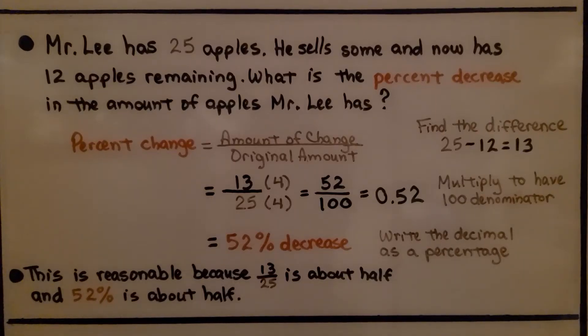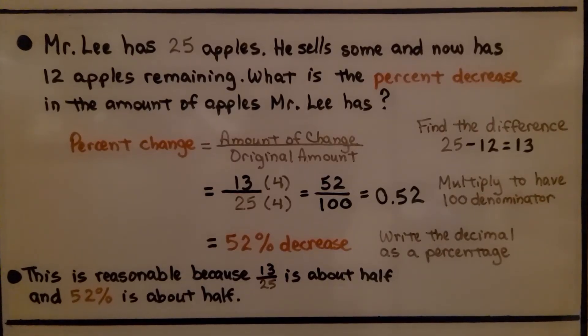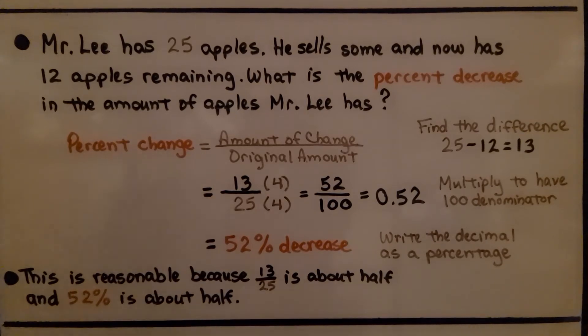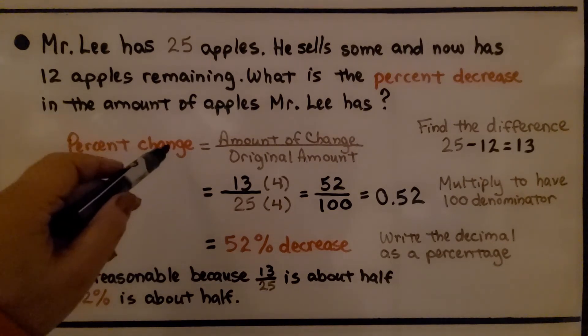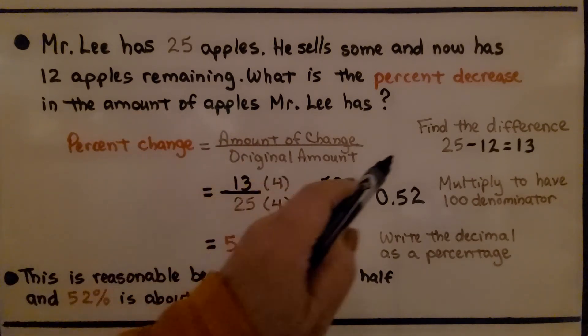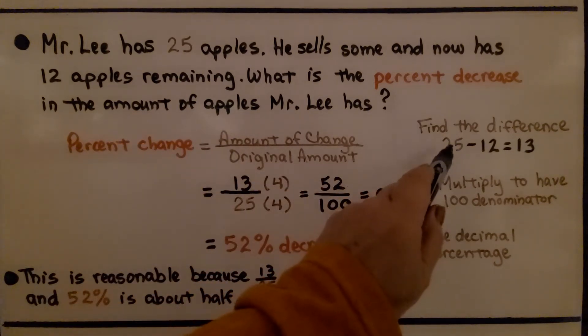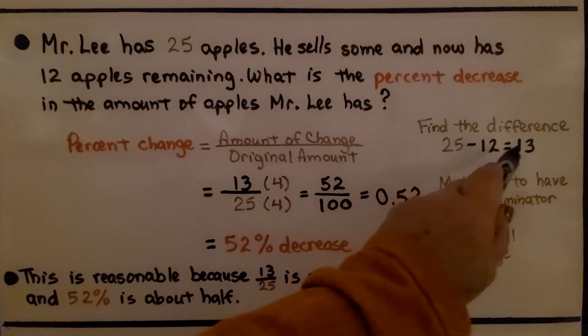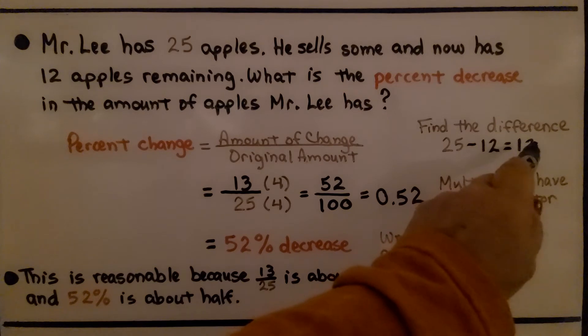Mr. Lee has 25 apples. He sells some and now has 12 apples remaining. What is the percent decrease in the amount of apples Mr. Lee has? So the percent of change is going to be the amount of change divided by the original amount. We find the difference between the 25 apples he had and the amount remaining. That means he must have sold 13 apples.